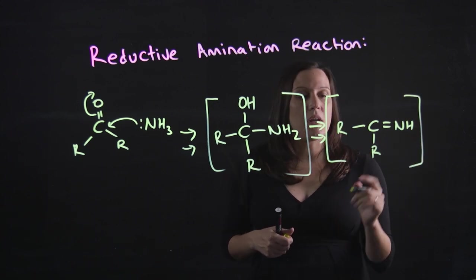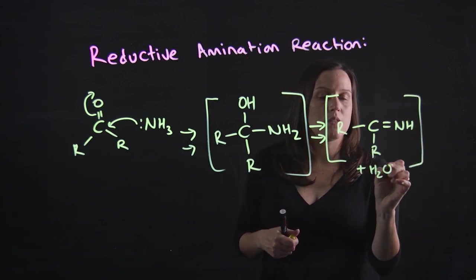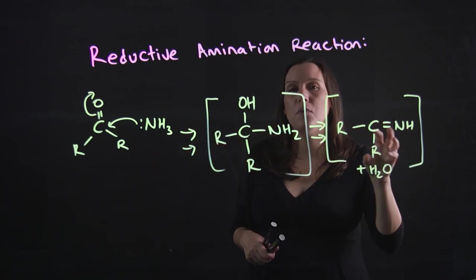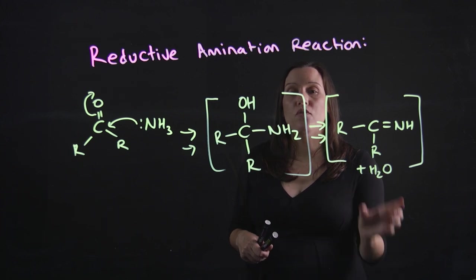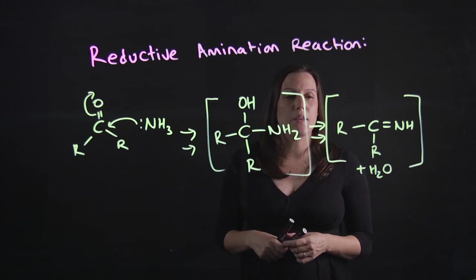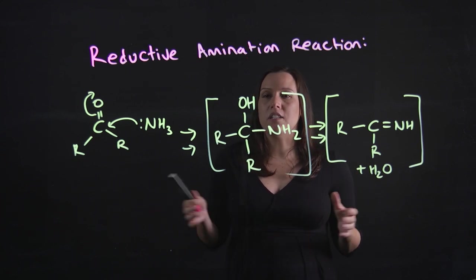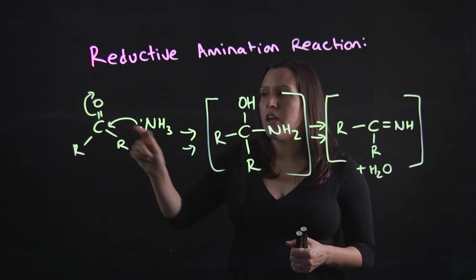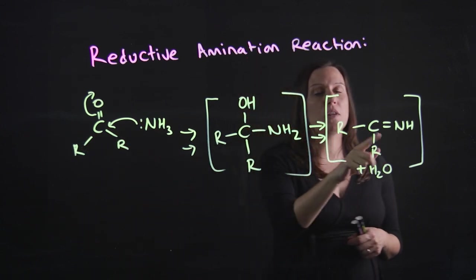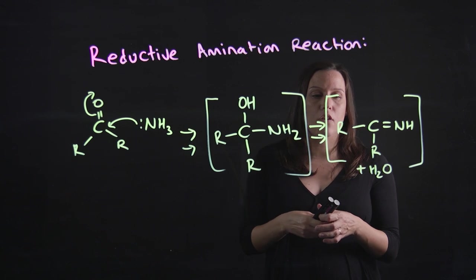So our imine intermediate - we also have water that's been formed. If we want to drive our reaction towards forming the imine we can remove some of that water out and it will force it all the way over to that imine. That's the first step. If you add your NH3 and your carbonyl functional group in a reaction together you will form the imine. Usually it takes about overnight to occur.